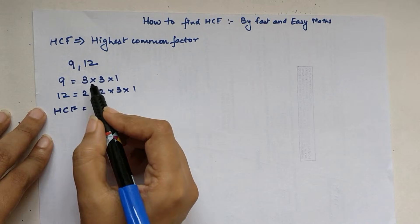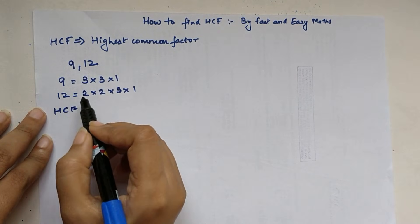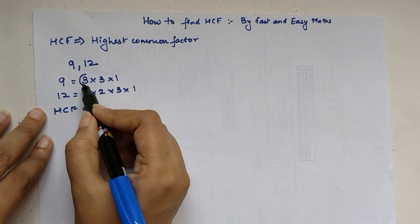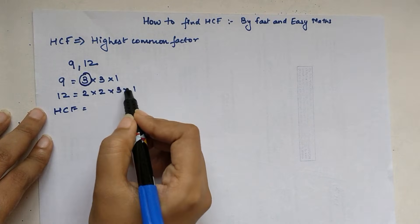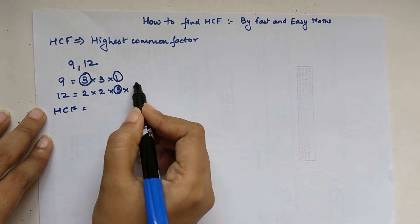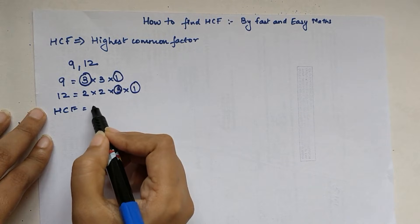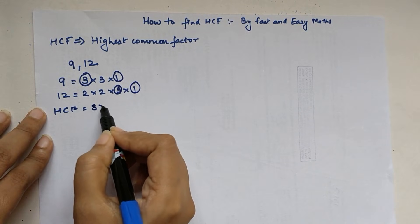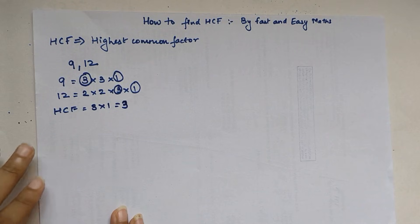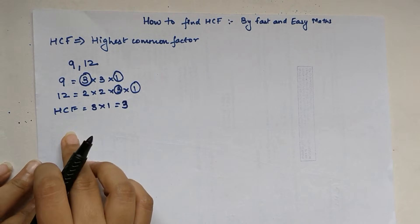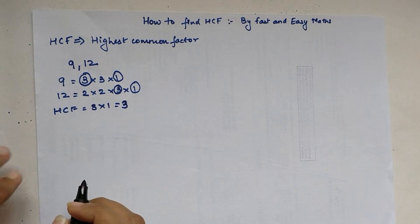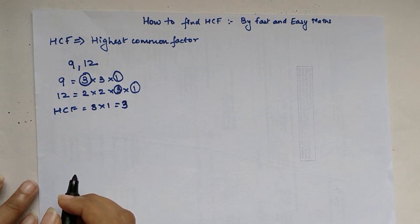To find the HCF, we need to find the factor which is common to both. Here I can see 3 as well as 1, so my HCF is 3 × 1, which gives us 3. But students, this method does not help too much when the number of values given is more than 2 or 3, or when the numbers are large.